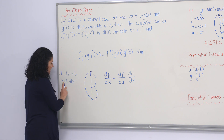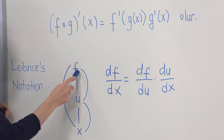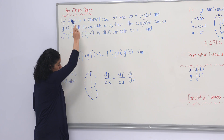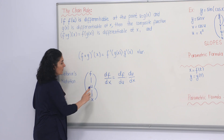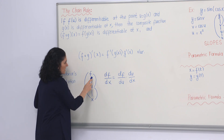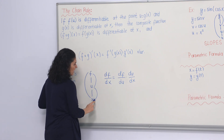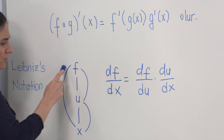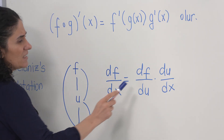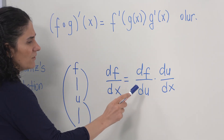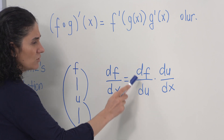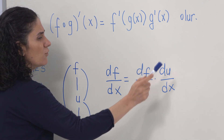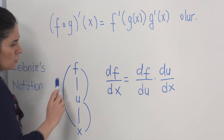Coming back to Leibniz notation: here f depends on u, and u depends on x. The derivative df over dx — the derivative of f with respect to x — equals the derivative of f with respect to u, times the derivative of u with respect to x.